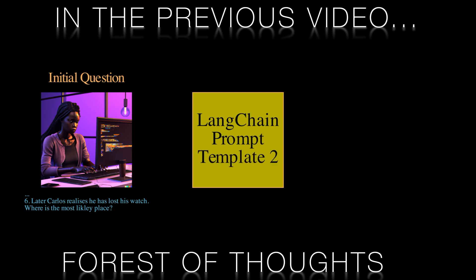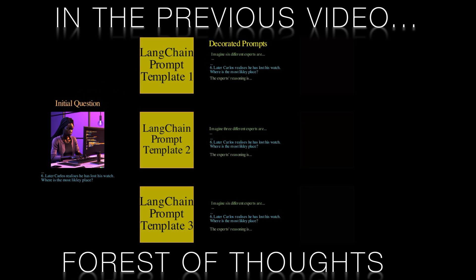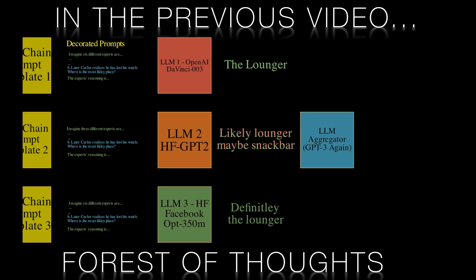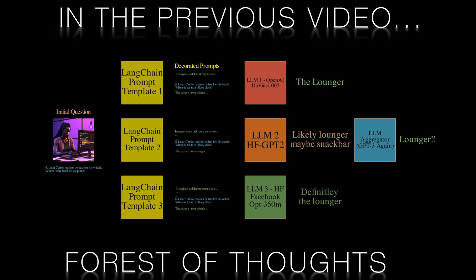In the previous video on forest of thoughts, we spun up a whole bunch of different LLMs and used the tree of thoughts prompting technique. Each LLM was its own tree in a forest of experts. A final LLM then served as a judge and synthesized the answers of all the individual trees in the forest. An advantage here is that we can build a very diverse forest, with generalist models like GPT, Orca, or Falcon, and specialized models such as Bloomberg GPT or Bio GPT.